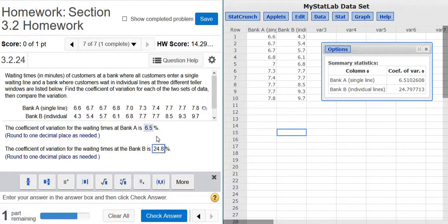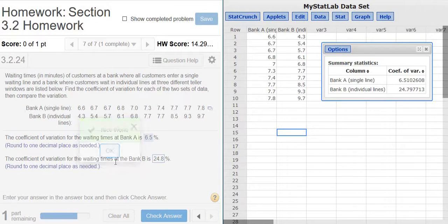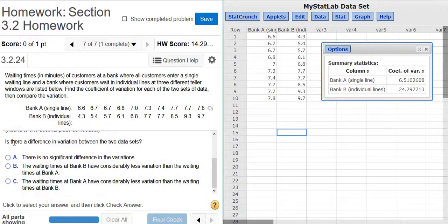Wow, that's a big difference. Usually a difference of greater than 5% is significant. So in this case, there is significantly more variation at bank B. The question asks if there's a difference in variation between the two data sets. Yes.